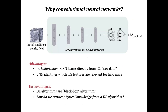We use convolutional neural networks because they don't require featurization. Typically with most machine learning models, you need to do some data compression to extract relevant features from your data before feeding them to the model. With CNNs, you don't need to do this — you can feed the raw initial conditions data so that the CNN itself learns what are the relevant features to predict halo mass. The disadvantage is that CNNs are known as black box algorithms that are quite hard to interpret — it's hard to understand what information they're actually using to make their predictions.